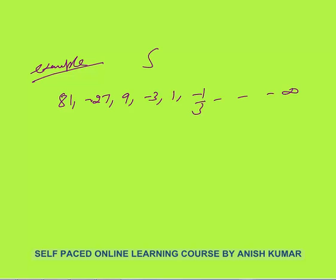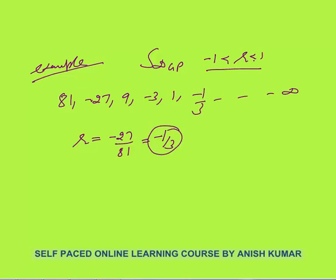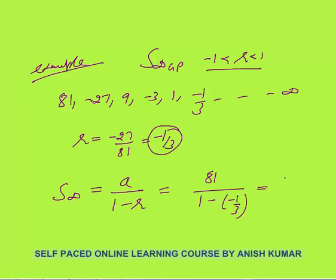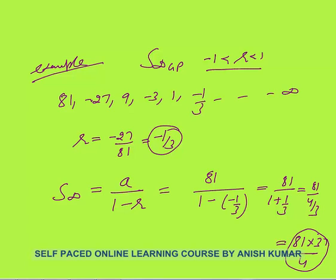For the final example, can we find the sum of infinite terms? The common ratio is −27/81 = −1/3, which lies between −1 and 1, so we can calculate it. Using the formula A/(1 − R): A is 81 and R is −1/3, giving 81/(1 + 1/3) = 81/(4/3) = 81·(3/4). That is the sum of infinite terms for this GP. That covers all the basics of GP. In the next lesson I will continue with questions on geometric progression. Thank you.